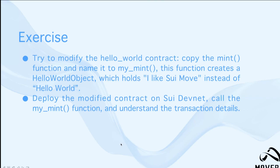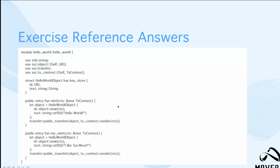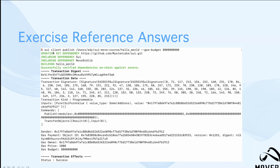Here is the exercise reference answer. We have the public entry function 'my_mint'. The my_mint function creates the same hello world object except the string is replaced to 'I like SuiMove', and then transfers the object to the deployer. Then you call 'sui client publish' to publish on chain, and call the my_mint function just as we did before. That's the end of this class — I hope you enjoyed it. See you next time.